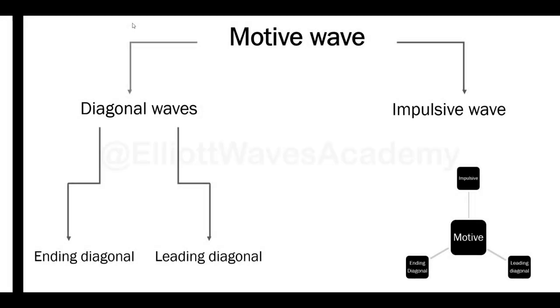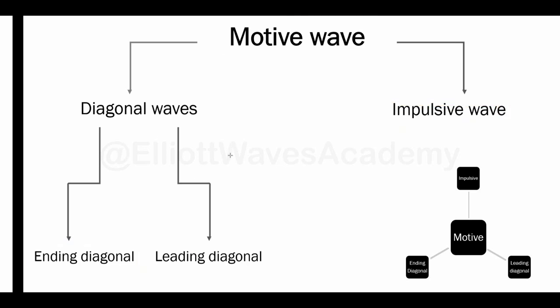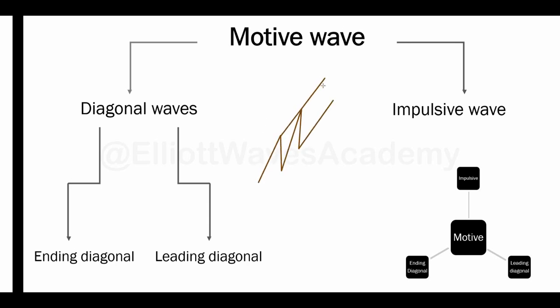In this video we're going to speak about the rules of the impulsive waves. As a small introduction, the impulsive wave is apart from the motive waves. There are other kinds of motive waves like the leading diagonal and the ending diagonal, but today's lesson is about the rules of impulsive waves. The impulsive wave is the most common shape in Elliott Wave method, consisting of five waves. The diagonals look like a normal wedge or an extended wedge.